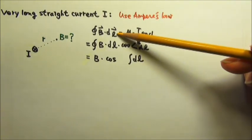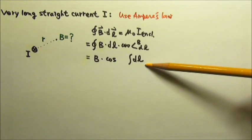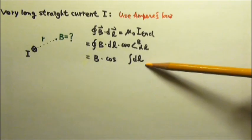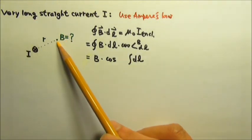So what shape Ampere's loop should you choose in order to meet our goal? The very long line of current has cylindrical symmetry, so we should choose a circle for Ampere's loop.